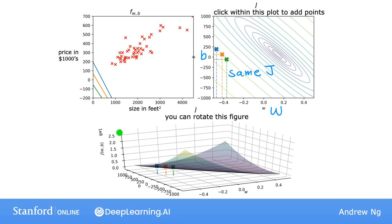So to get a contour plot, you take the 3D surface at the bottom, and you use a knife to slice it horizontally. You take horizontal slices of that 3D surface and get all the points that are at the same height.